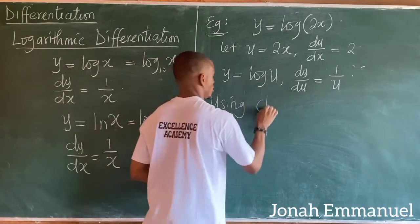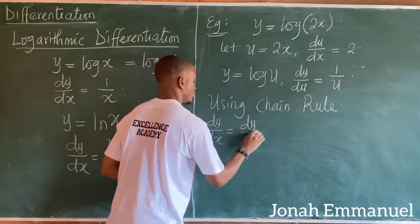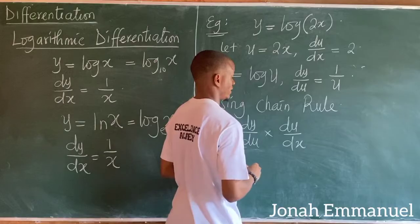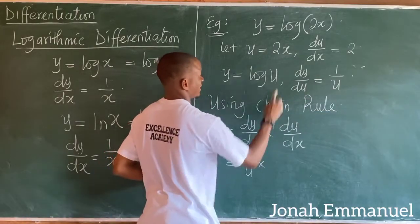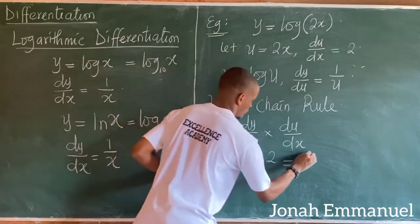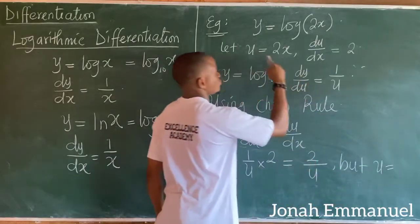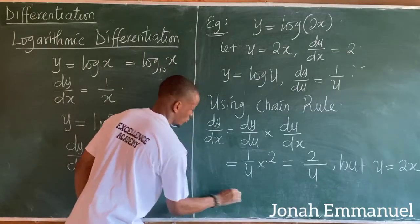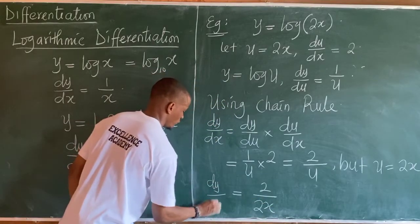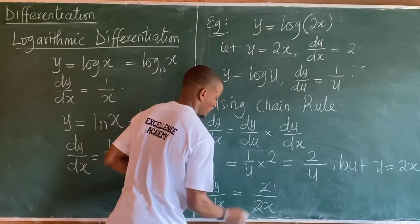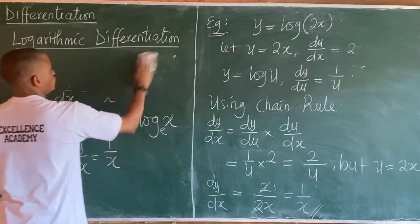Using chain rule: dy over dx equals dy over du times du over dx. That's 1 over u times 2, which equals 2 over u. But u equals 2x, so this is 2 over 2x. The 2s cancel, giving dy over dx equal to 1 over x. This is your answer when you differentiate log 2x.